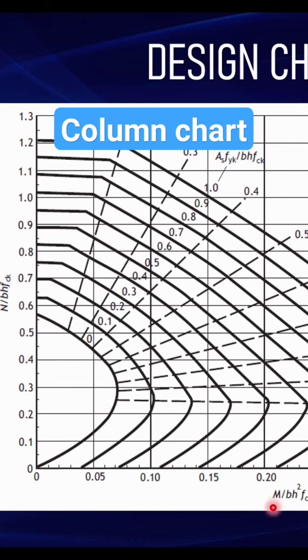you have M, which signifies the bending moment. Depending on the kind of column you are designing—either short or slender—after you analyze it, you compute the bending moment exerted on the column, then divide by bh²fck.